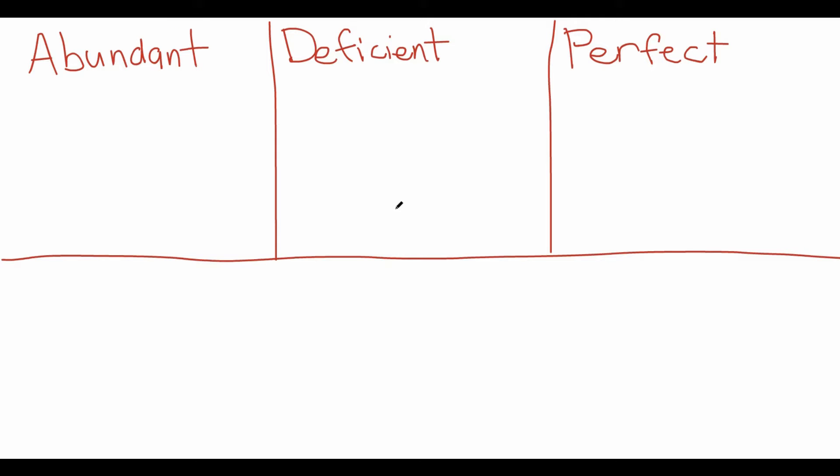In this video I'm going to explain the definitions of what an abundant, deficient, and perfect number are.